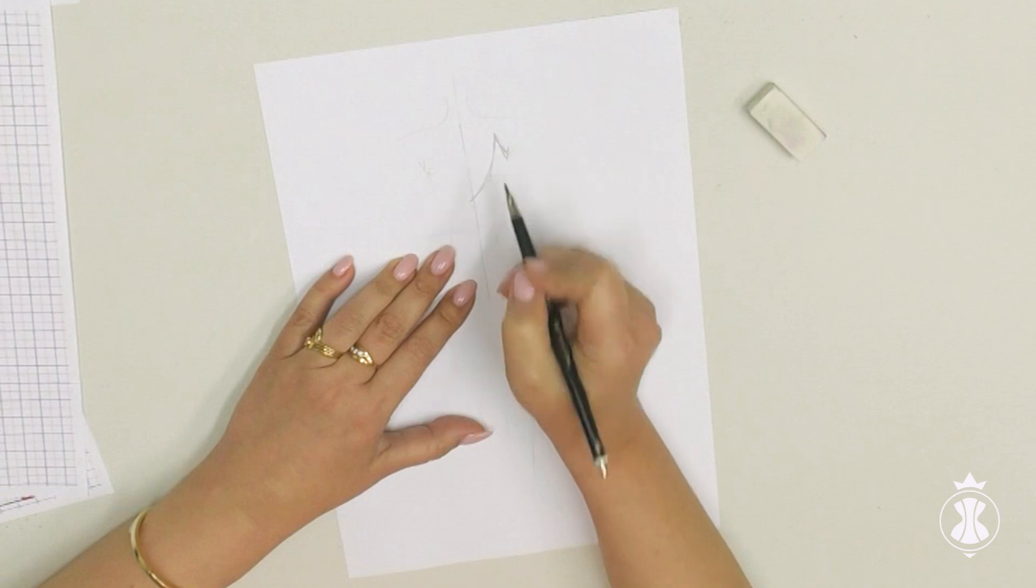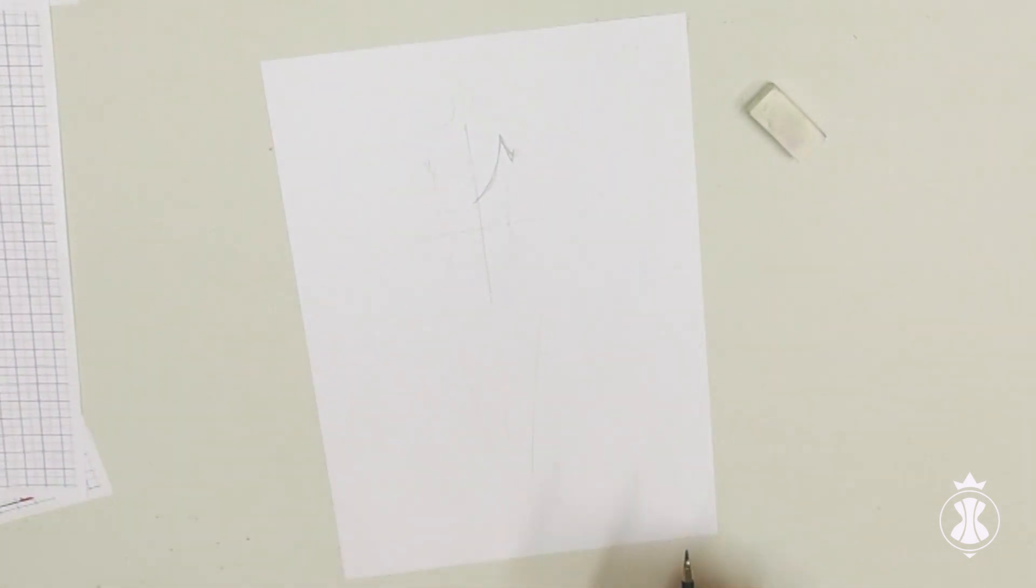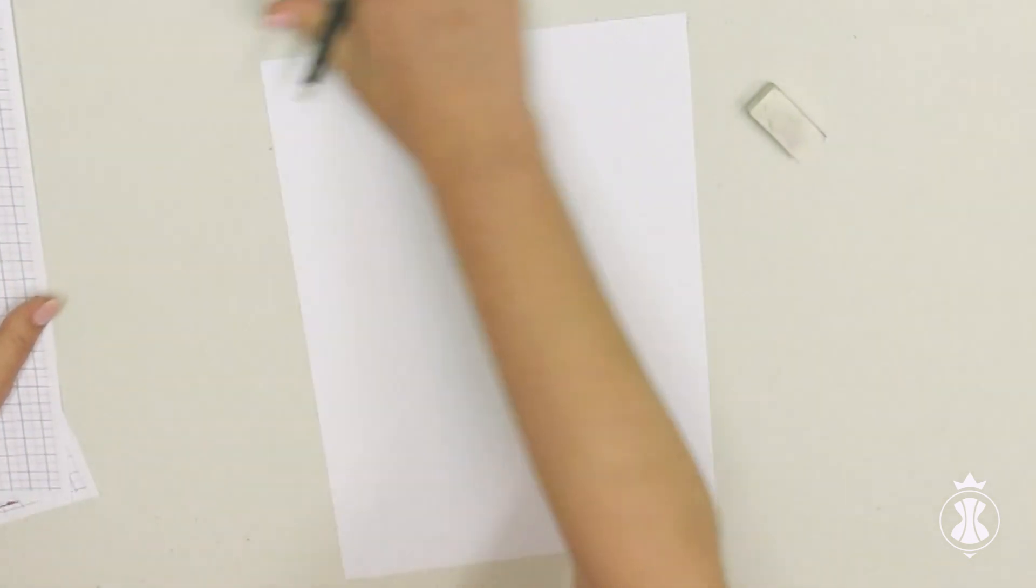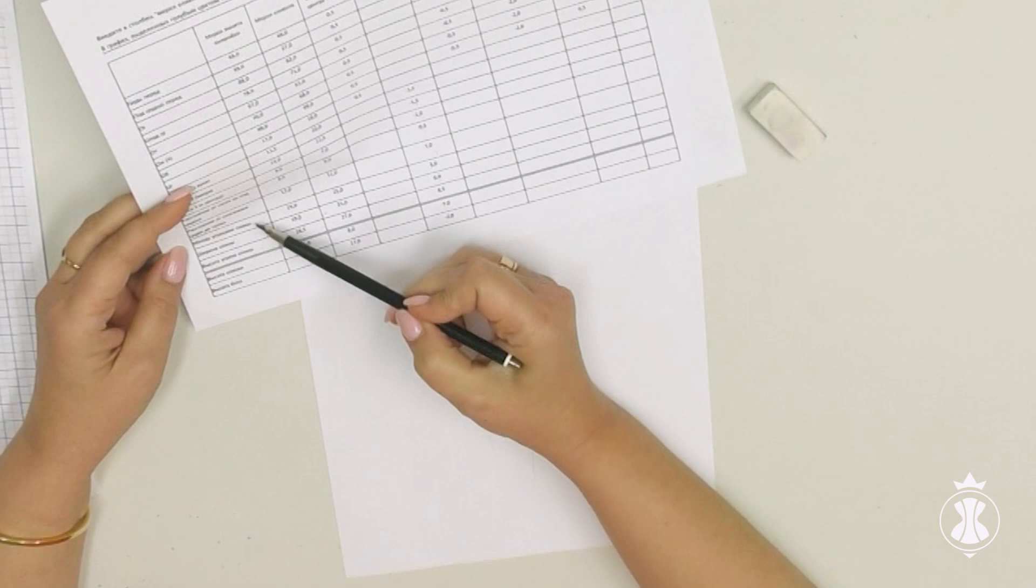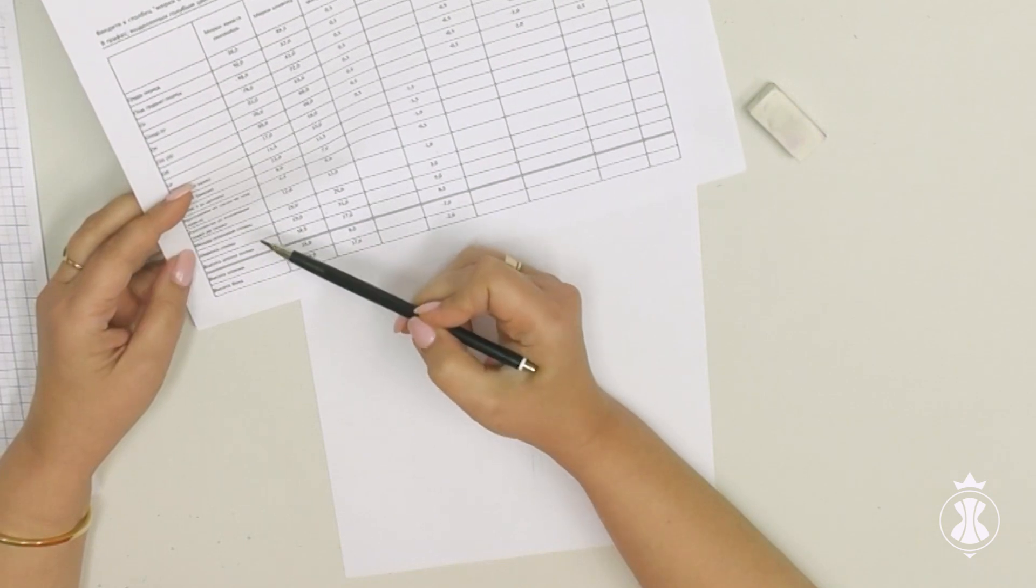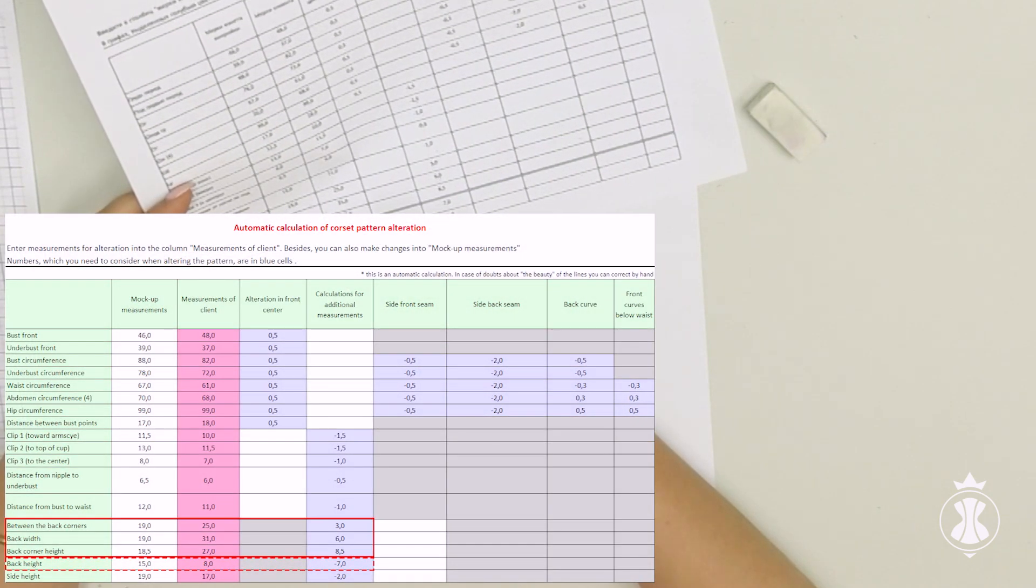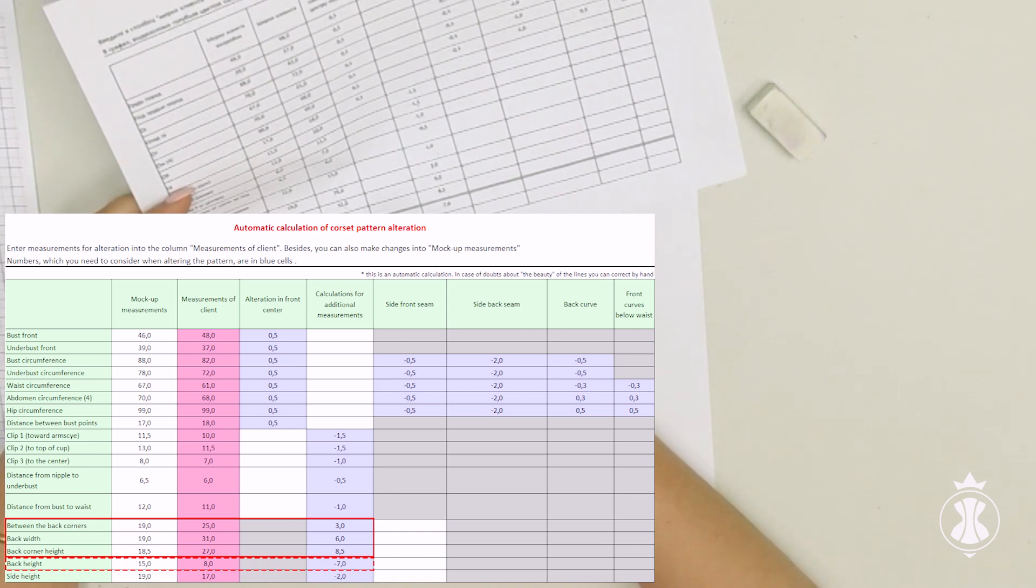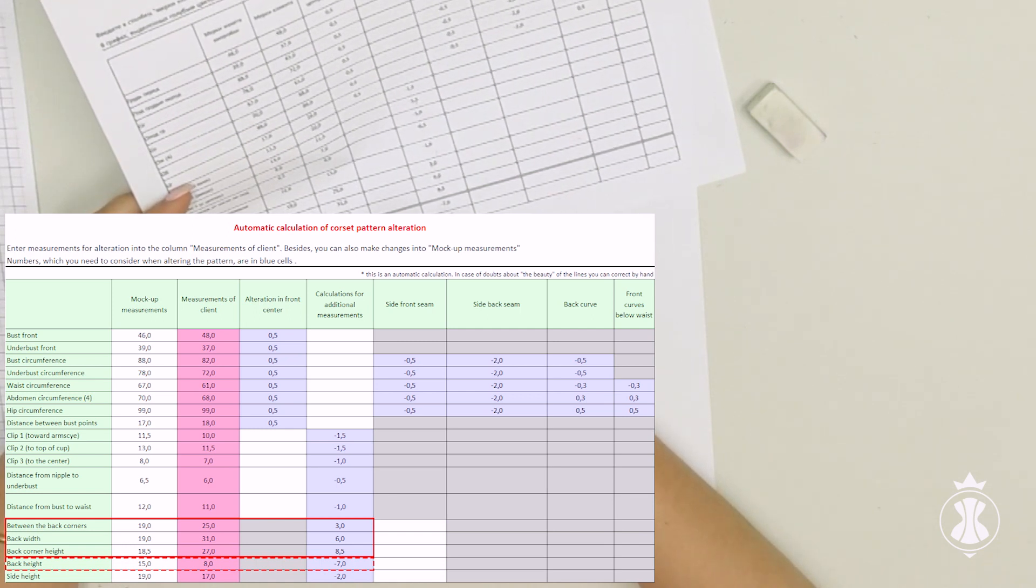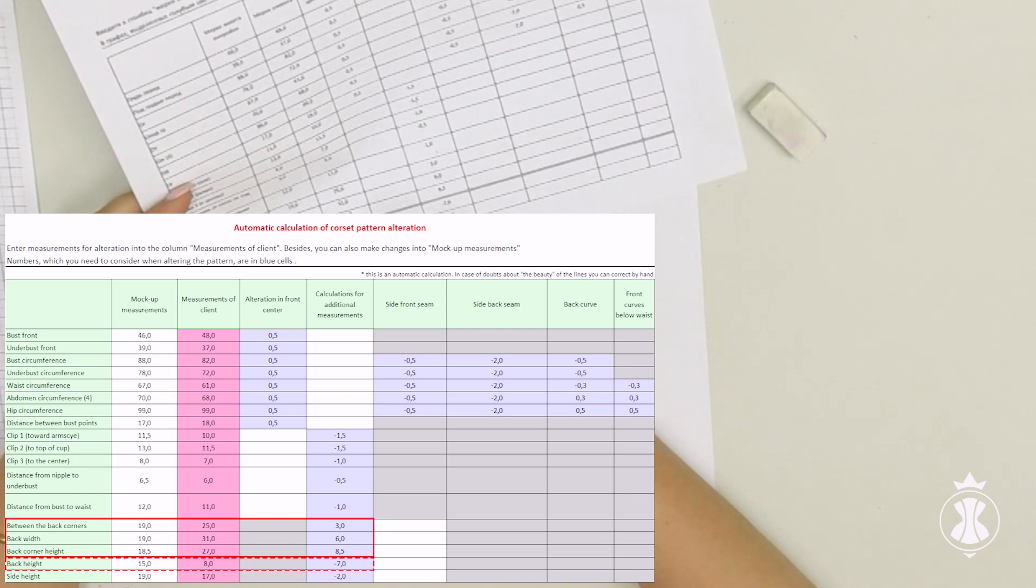I reviewed drafting of such corners on open backs in my previous courses. However, this problem is important and I will explain briefly about alteration of such corners. There are three additional measurements in the table for alteration of the back corners and the alterations are calculated automatically. We just need to use these calculations and make simple drafting.